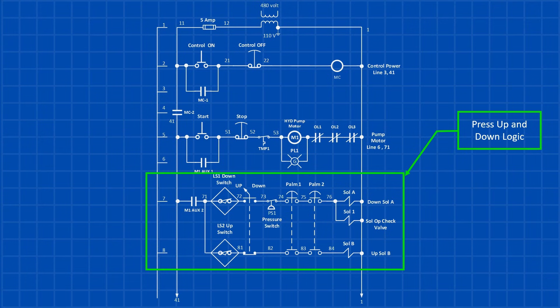Once all these conditions are met, the operator can press the two-handed palm switches, and the press will move up. The press will continue moving until the press up proximity switch is activated, which will open the circuit and stop the movement.